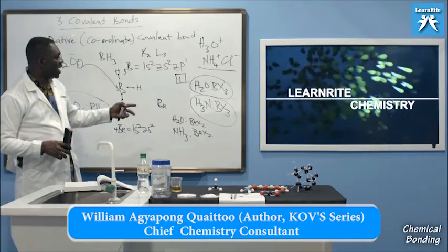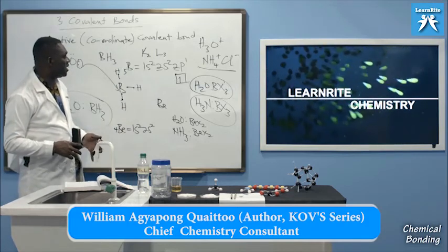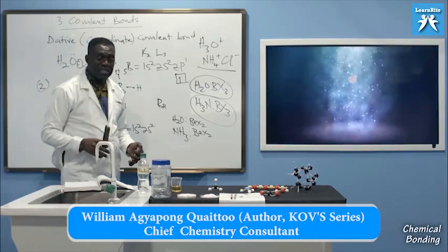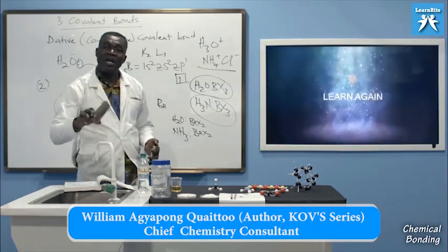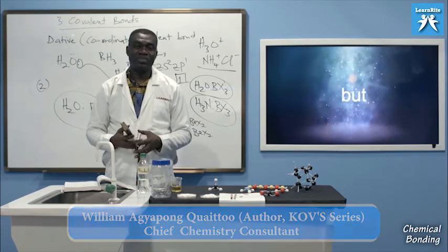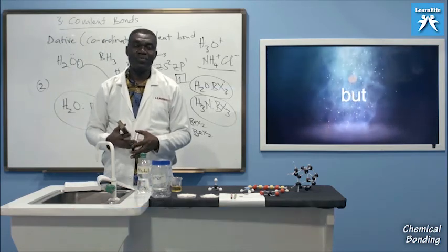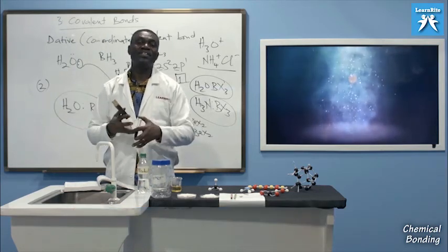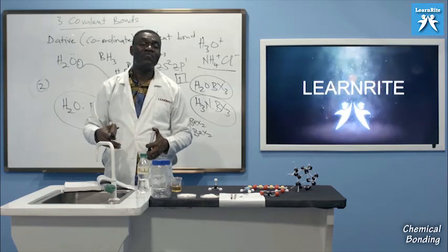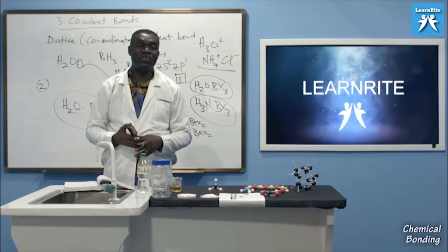We are ending here. In the next video we are going to look at polar covalent bonds and nonpolar covalent bonds, and we will use all of this to explain some physical properties. A further explanation of covalent bonding through hybridization will also be covered — showing how orbitals interchange and electrons move to form various bonds.